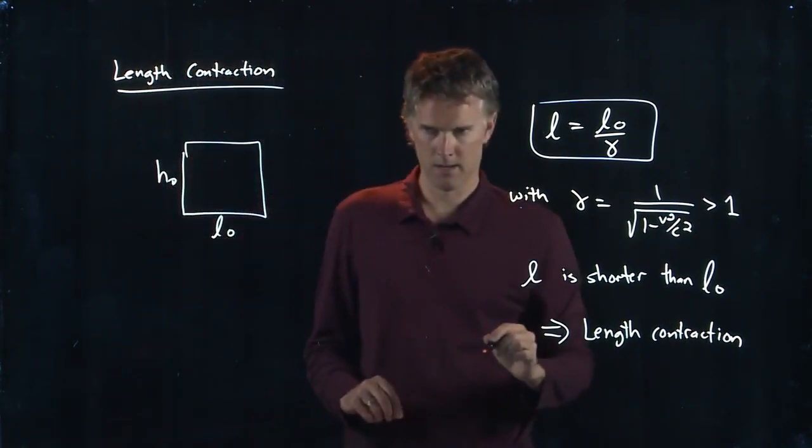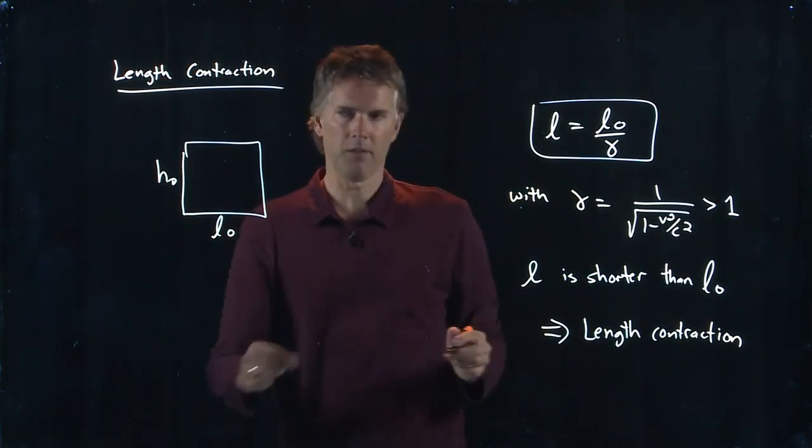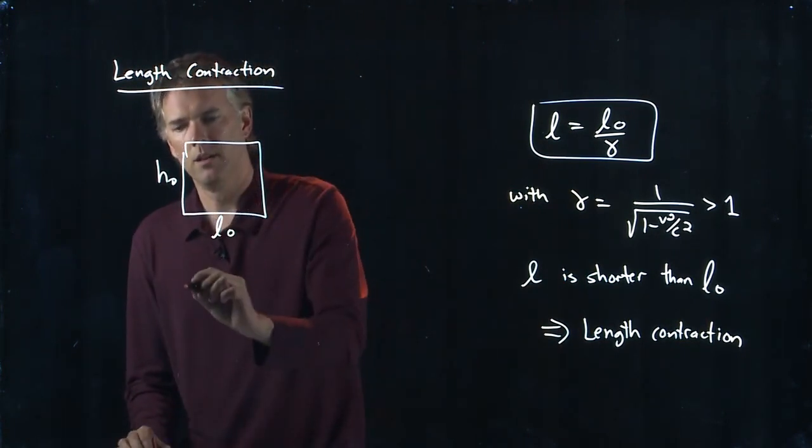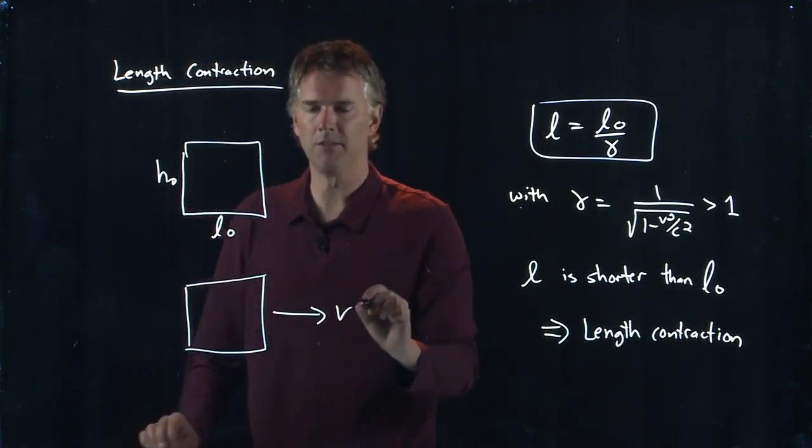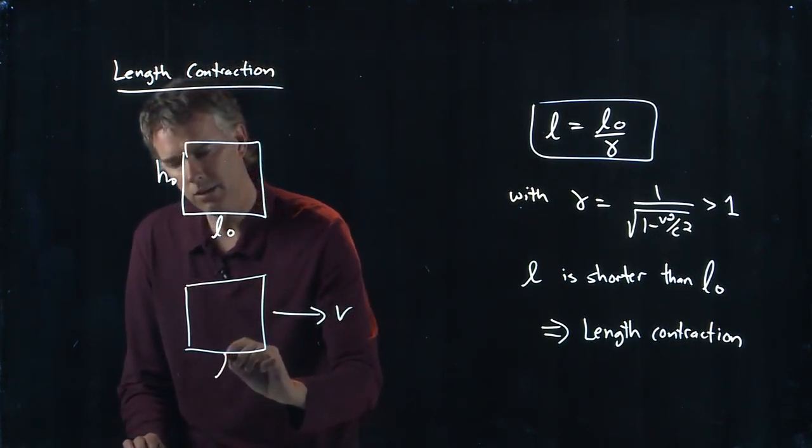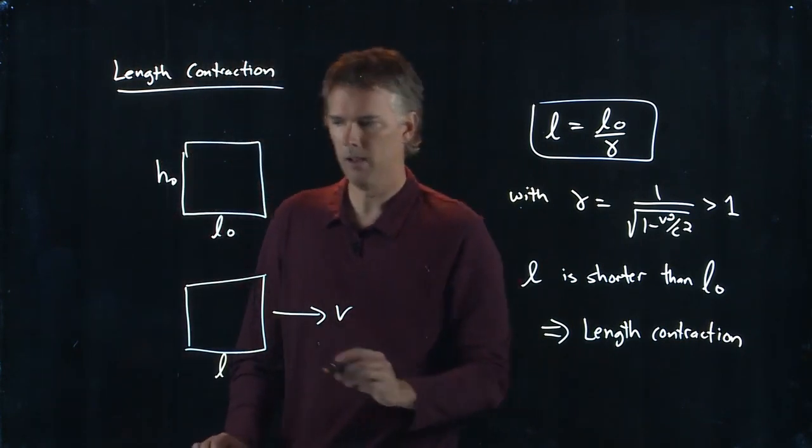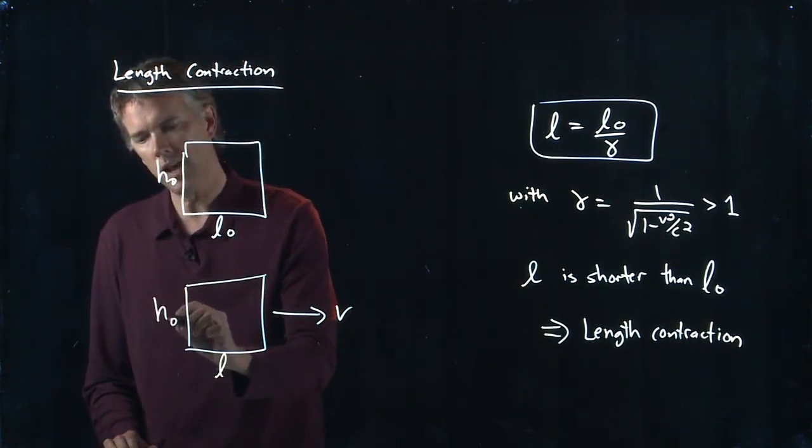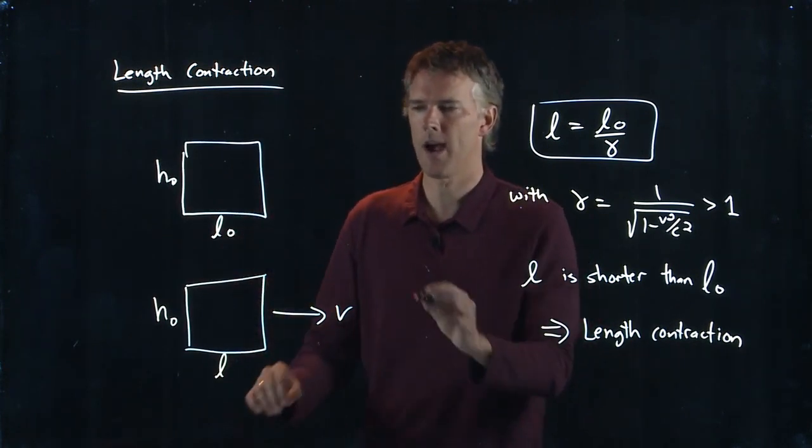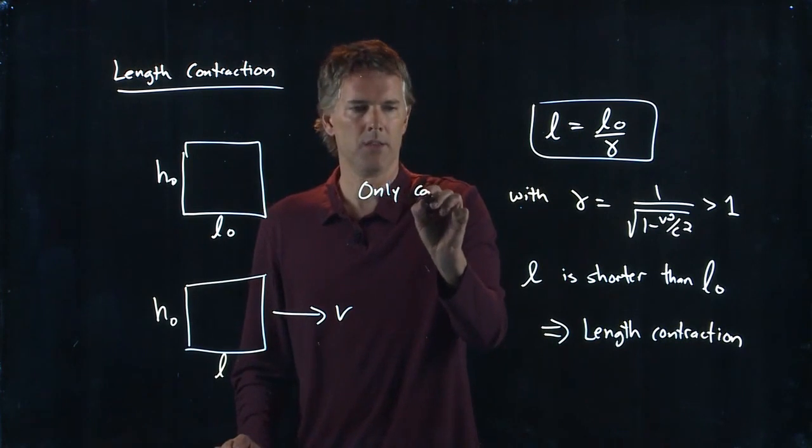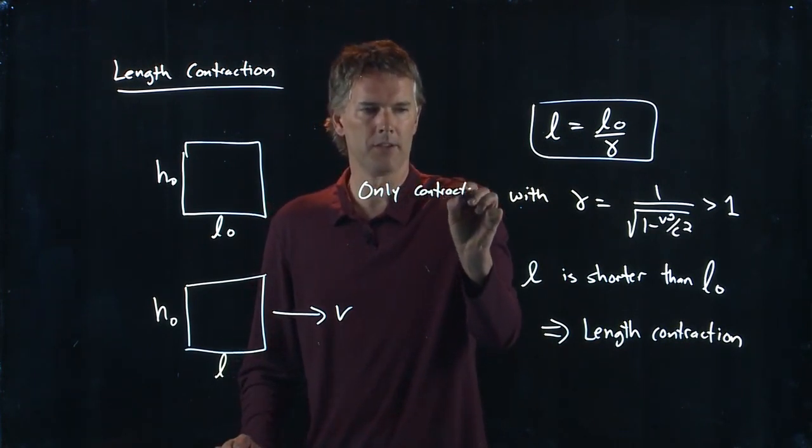and length L-naught, and I move that box at some high speed V, the length contracts to L, but the height stays exactly the same. It only contracts in the direction of the velocity.